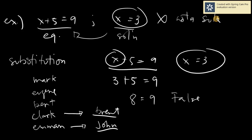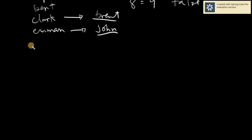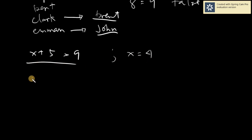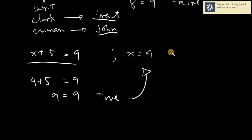What we are doing here is identifying whether the solution is correct or not for our given equation. What do you think is the value of X so that X plus 5 equals 9? Obviously, it should simply be 4. So if we replace all X's with 4: 4 plus 5 equals 9, giving us 9 equals 9, which is true. Therefore, this solution is correct.